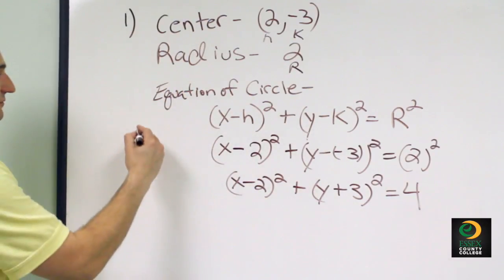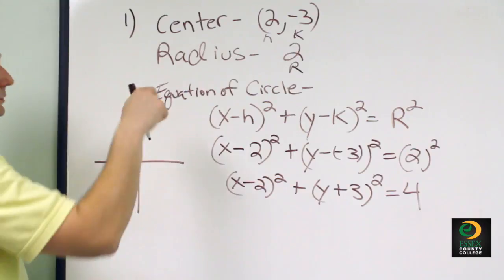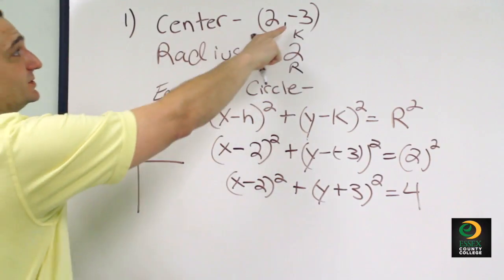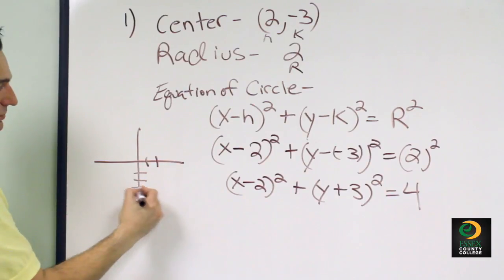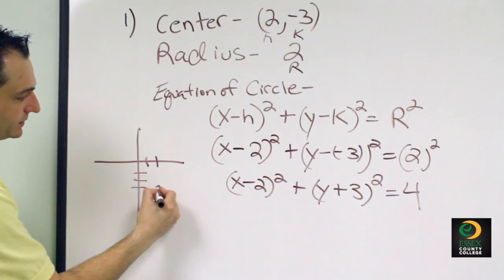Now it wants us to sketch its graph. And all we're going to use is the center and the radius. So the center is at 2, negative 3. 2, 1, 2, 3. 2, negative 3 is right there.